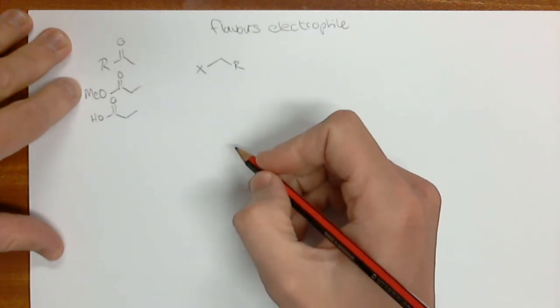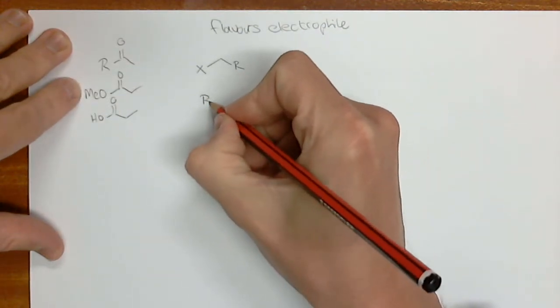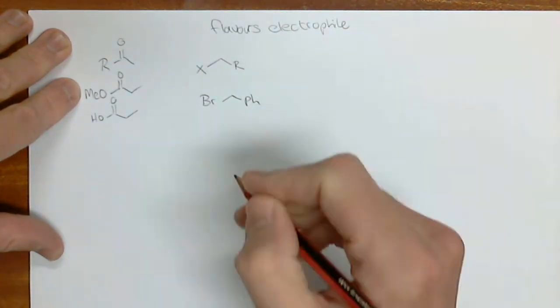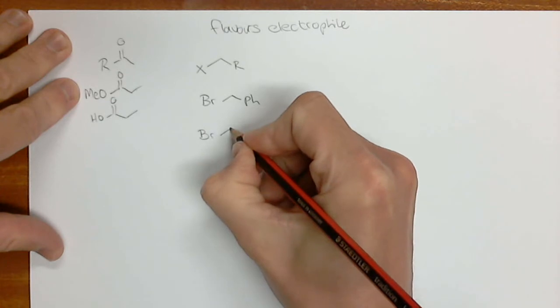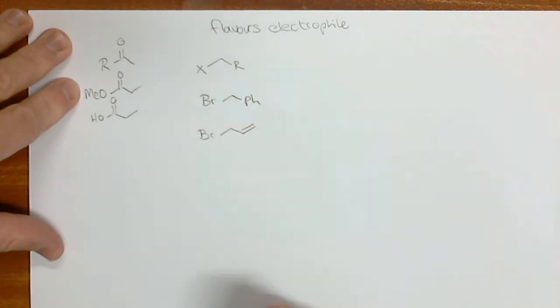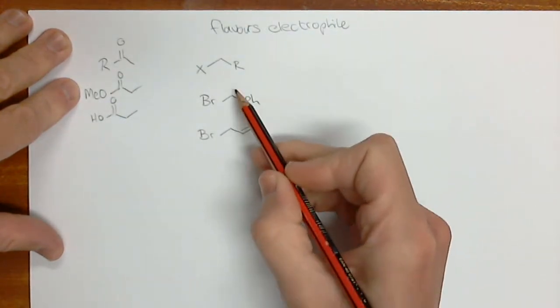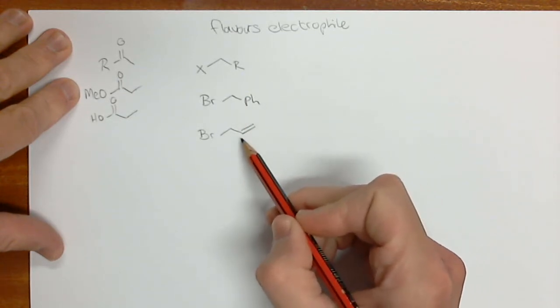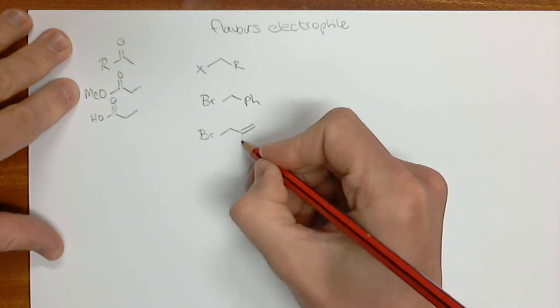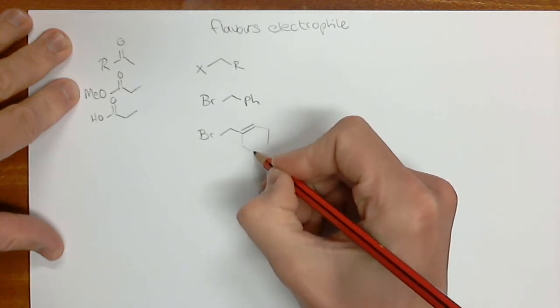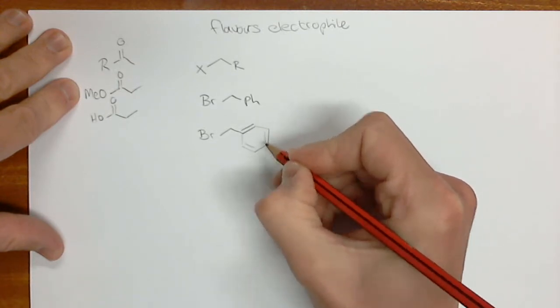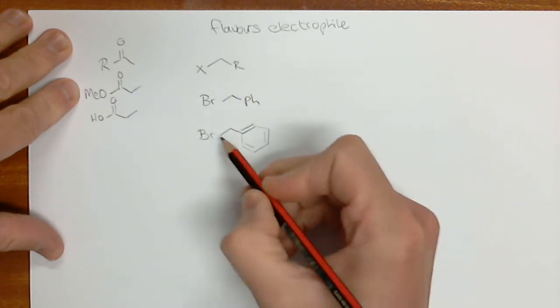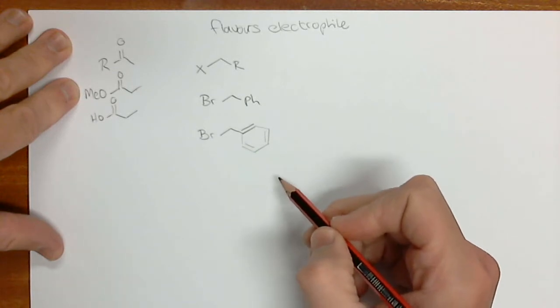Some of the ones we've seen are benzyl bromide, which I've used a couple of times, and allyl bromide. I want you to realize these two are very similar. If I draw in some extra bonds here, we see this is like a phenyl ring. So there's a similarity between the two.